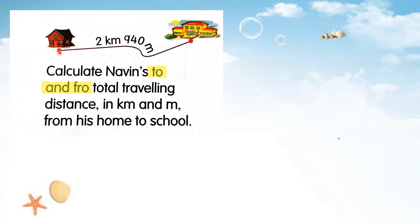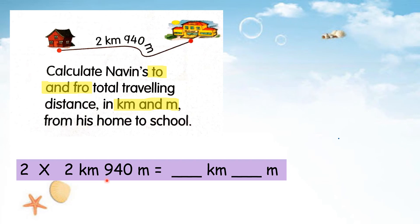To and fro means go and then come back. From house to school, after that from school go back to house. Means that twice, right? Twice. We need to times 2, because 2 times. And then the final answer you must write in the unit km and m. So now, how to write the number sentence? Just now I said twice, 2 times, right? So 2 times 2 km 940 meter, and the final answer is in km and meter.